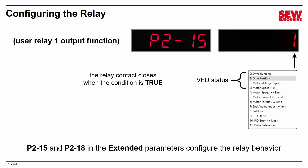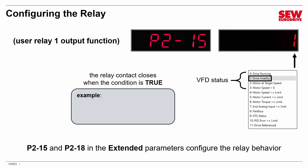The default option 1, drive healthy, indicates if the VFD is faulted or able to run. If the VFD is normal and able to operate, the relay contact closes signaling all is well. If the VFD goes into a fault condition, the relay contact opens to indicate this. This is a fail-safe arrangement — if something goes wrong like a power supply failure or a wire getting cut, it will signal back that something is wrong, rather than falsely indicating everything is fine.